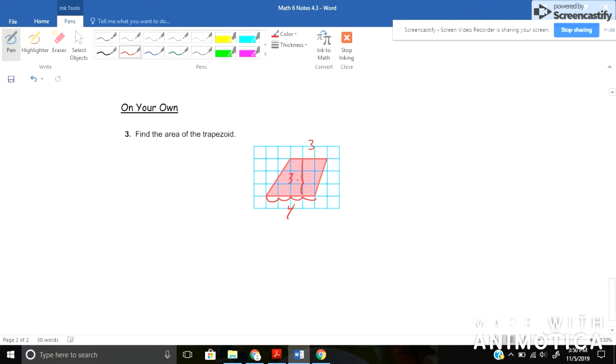And then my height, again just from one base to the next, one, two, three, it's three units tall. So area equals one half times the height which I found was three, times my two bases added together, seven.